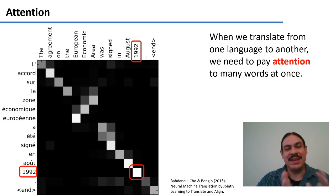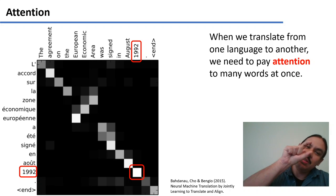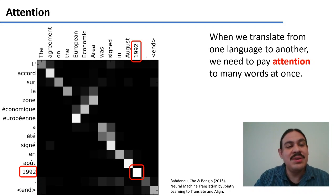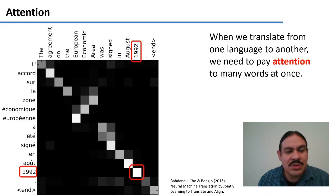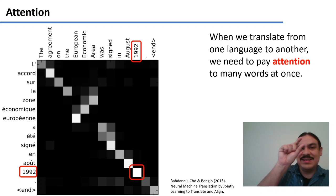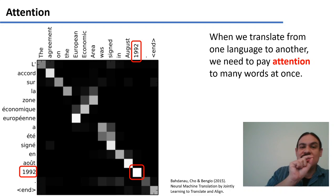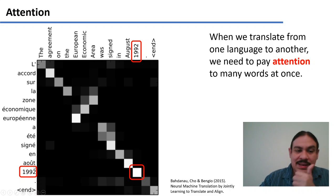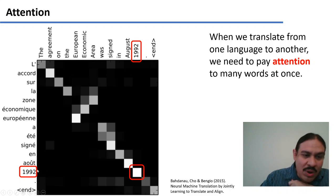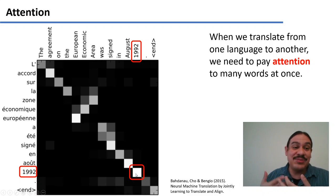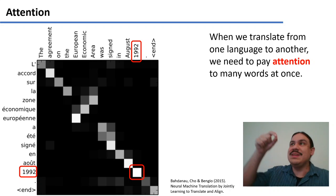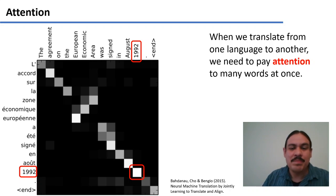So take a look at this matrix here. Here we have an English sentence: 'The agreement on the European Economic Area was signed in August 1992' on top, and then the French translation from top to bottom. What we have here is the translation, but also a matrix that tells you how much attention you're paying to each element in the English sentence when you're generating the French element. For example, when you are generating a French element, you're looking at the number 1992, of course — if you just have the sequence 1992, it's obvious that it only needs that sequence to generate something similar.